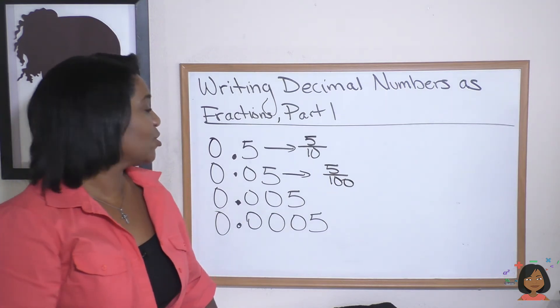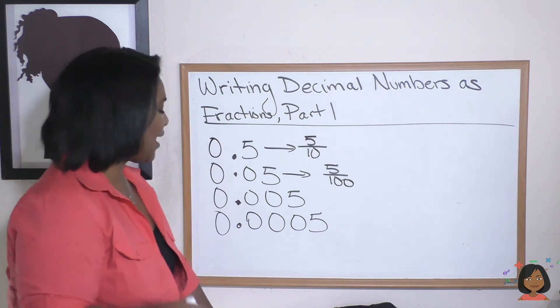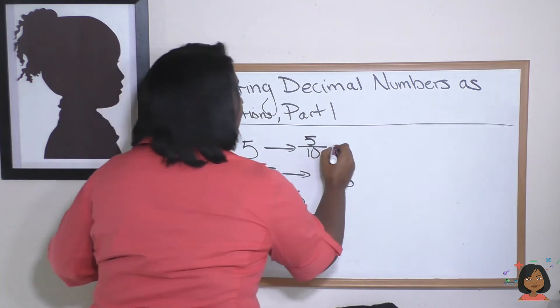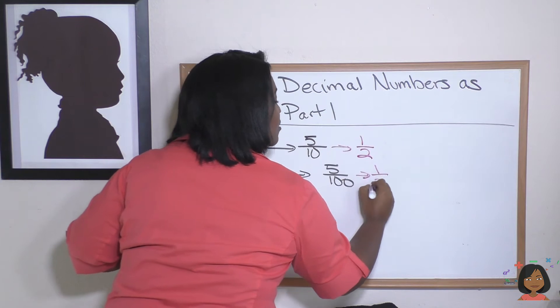Now I'll go ahead and write those in. I was trying to save myself some space but I'm going to actually use a different color. Here we go: one half, one twentieth.